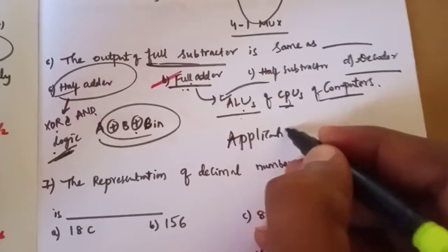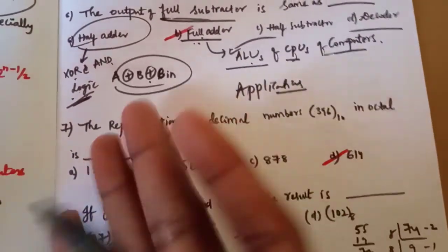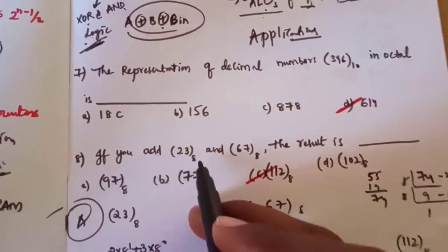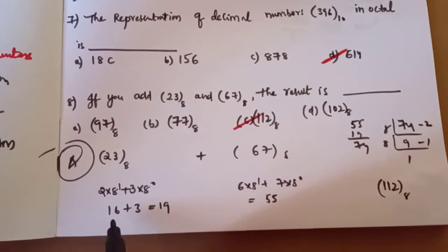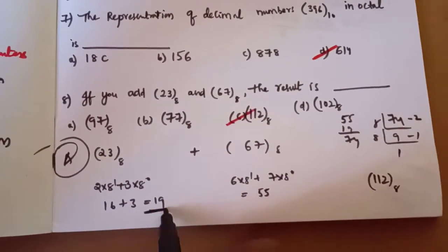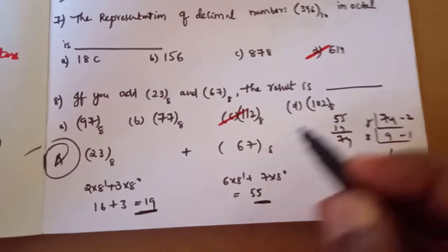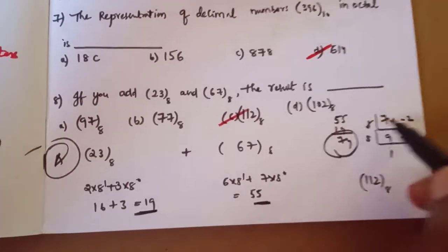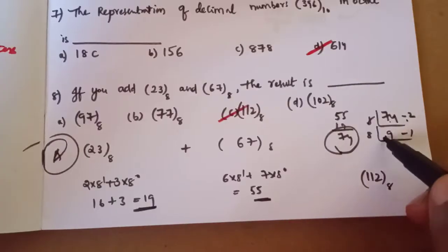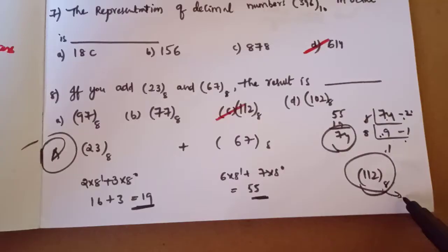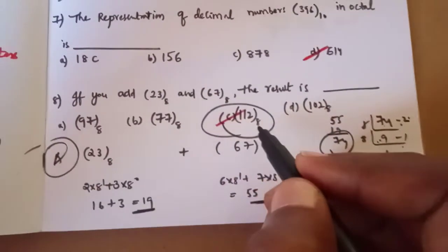Next, if you add 23 and 67 in octal, the result is: 3 plus 7 is 10 in decimal which is 8 plus 2, giving 2 carry 1. Then 2 plus 6 plus 1 carry is 9. So the result in octal is 112.